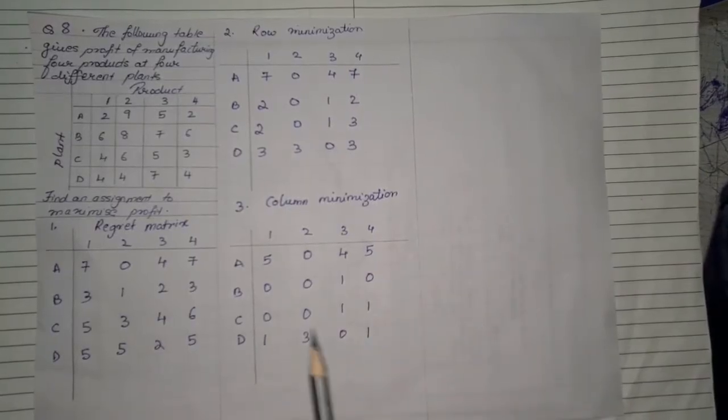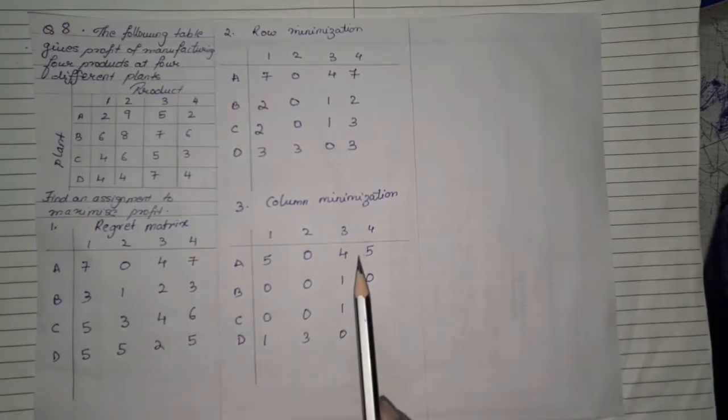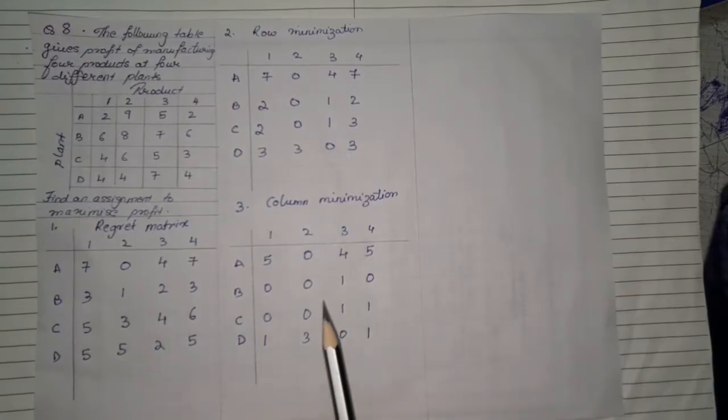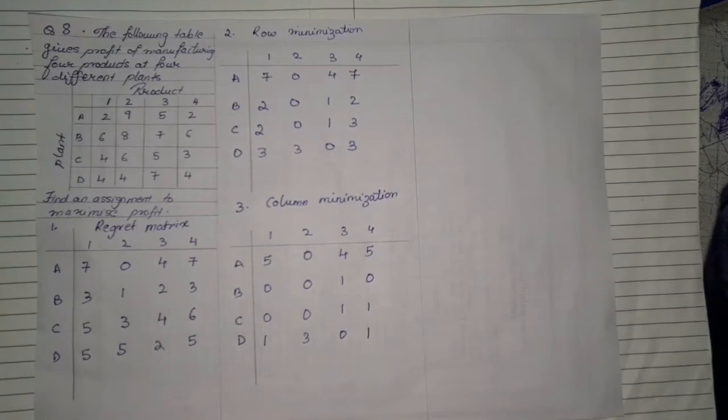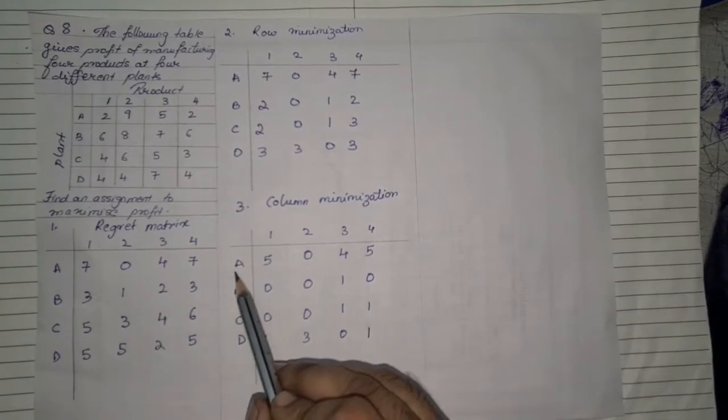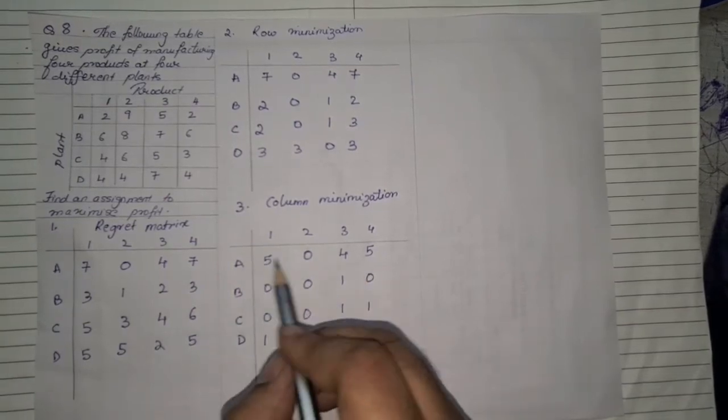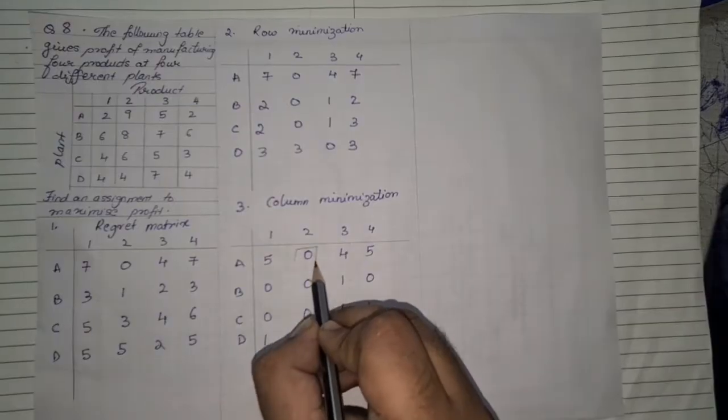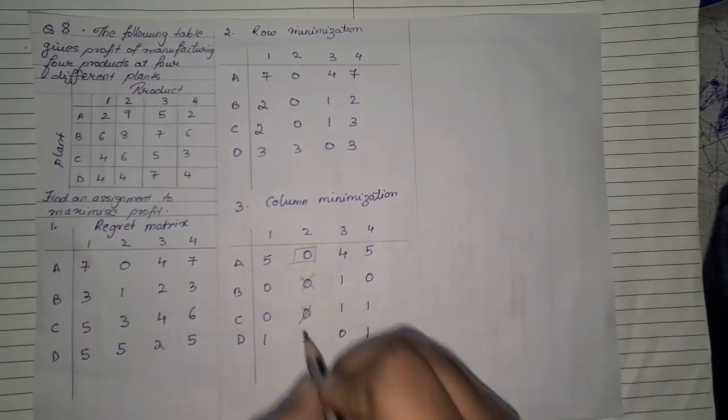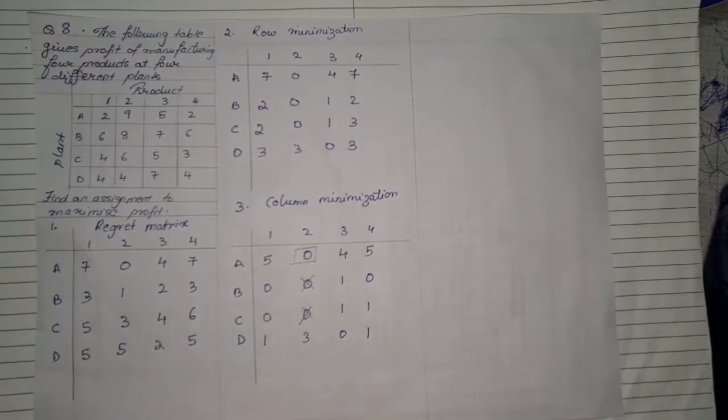Once you are done with the column minimization our next step is we need to assign all the rows and column which has first single zeros. So we started the row form in the first row. There's only one zero so that particular value get assigned and all of the zeros in the corresponding column will get crossed out. In the second row there are two zeros so we can't choose right now so we'll give it for standby. We'll go to the row three, row three has only one zero we mark that.